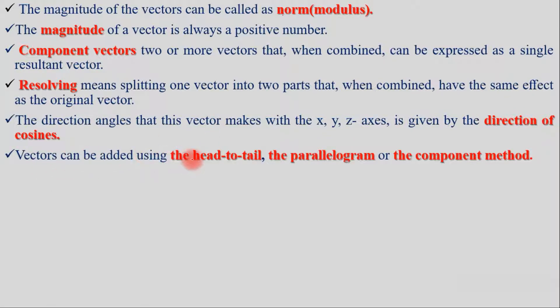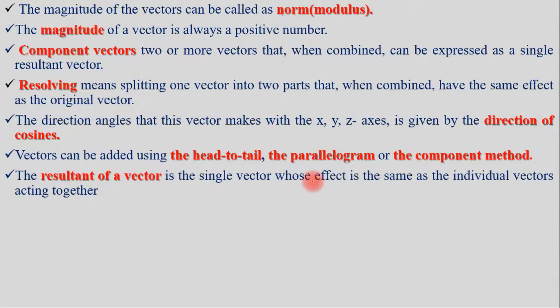Vectors can be added using graphical methods. The resultant vector is the single vector that has the same effect as the individual vectors acting together.